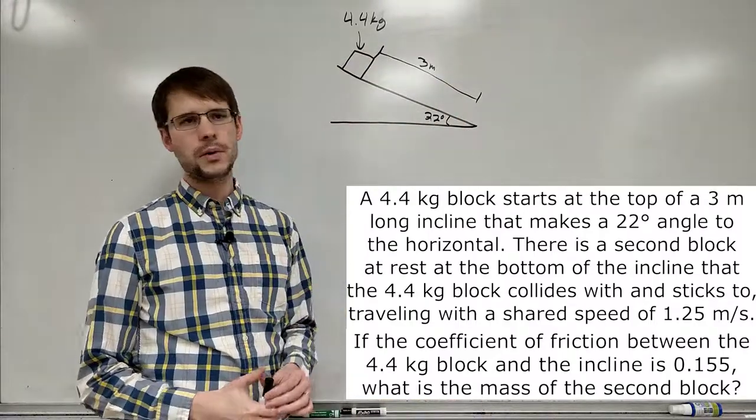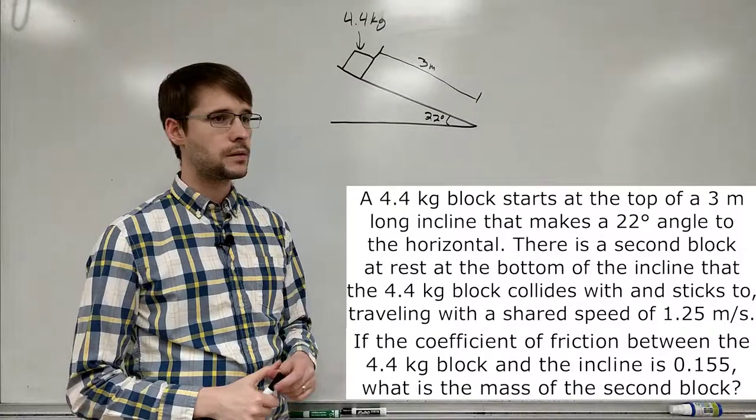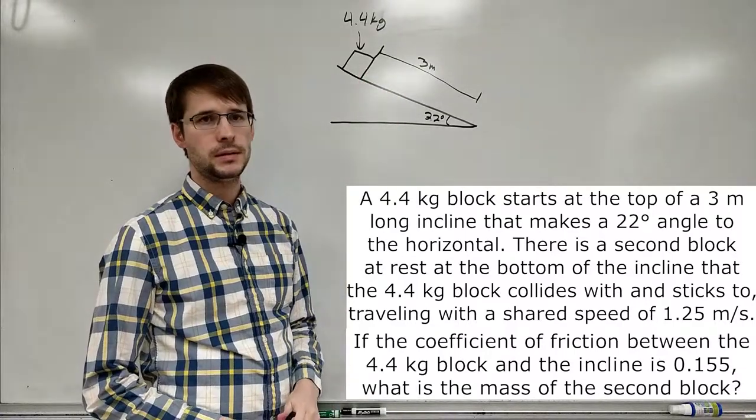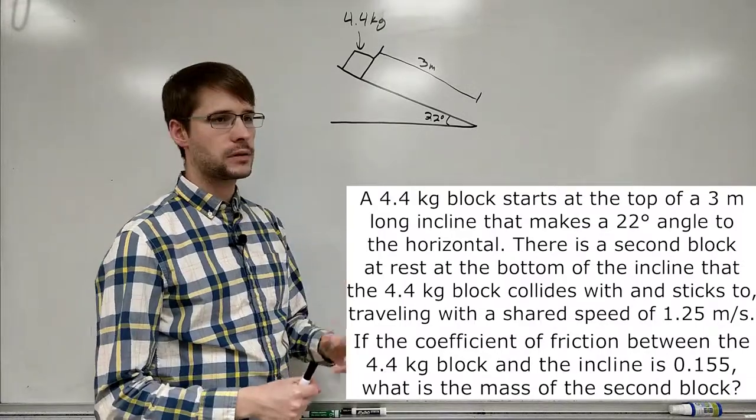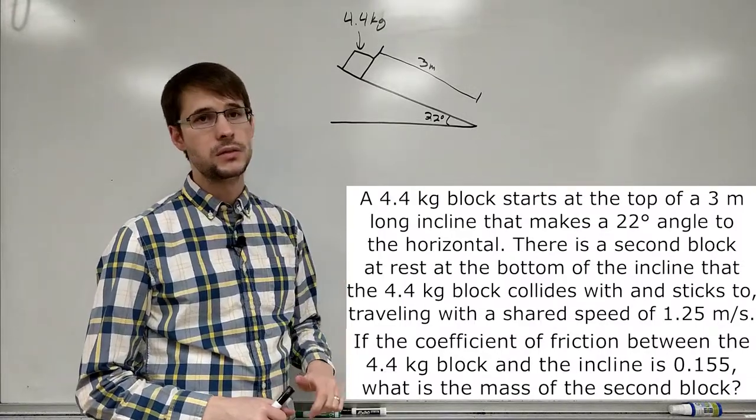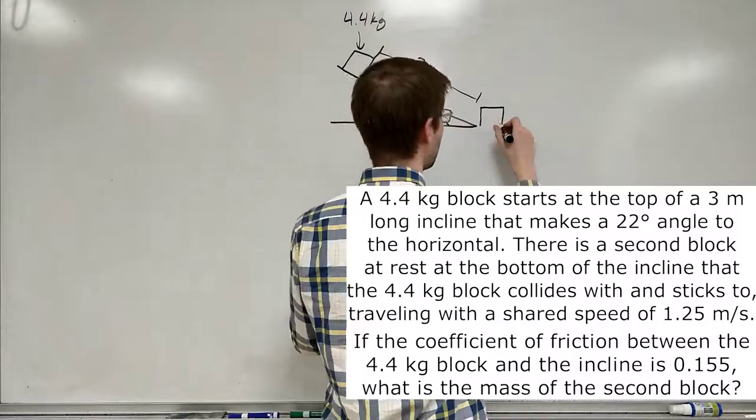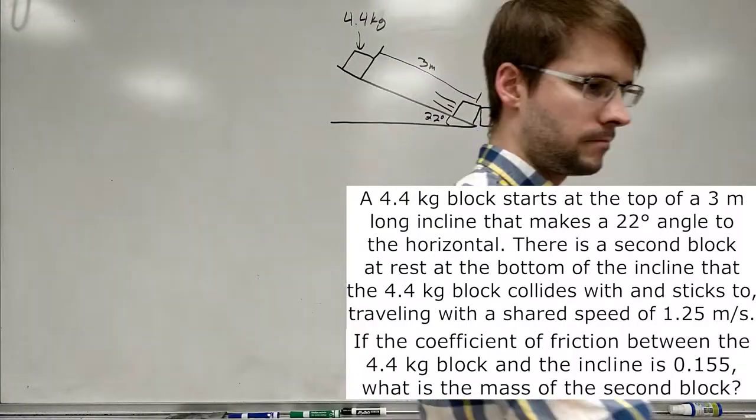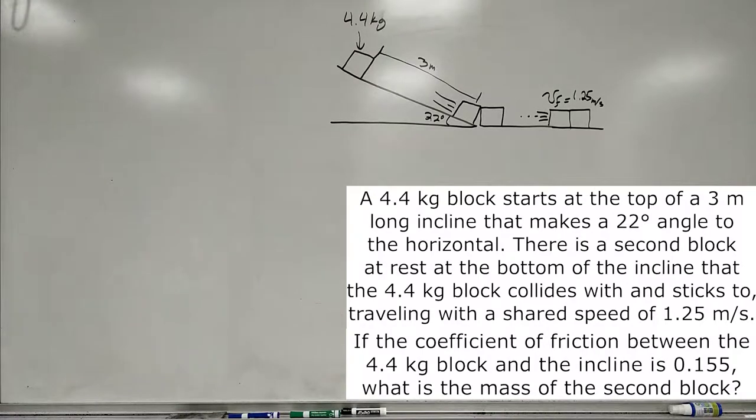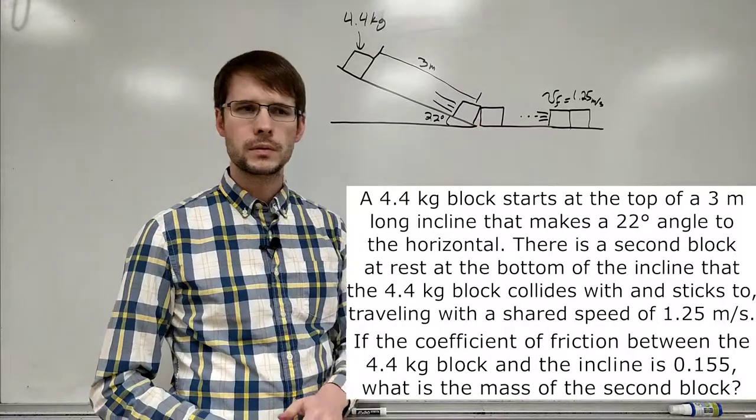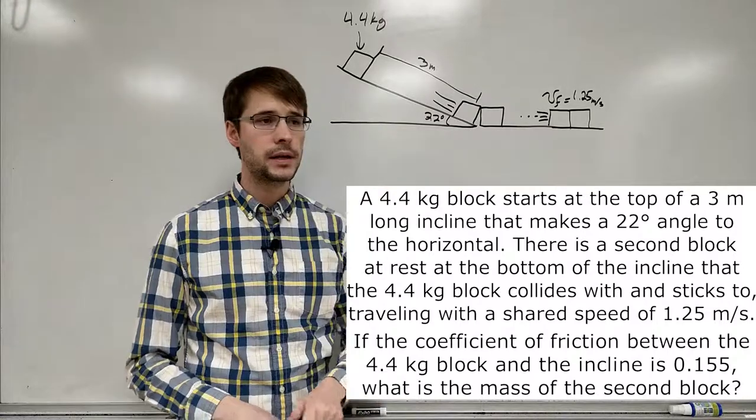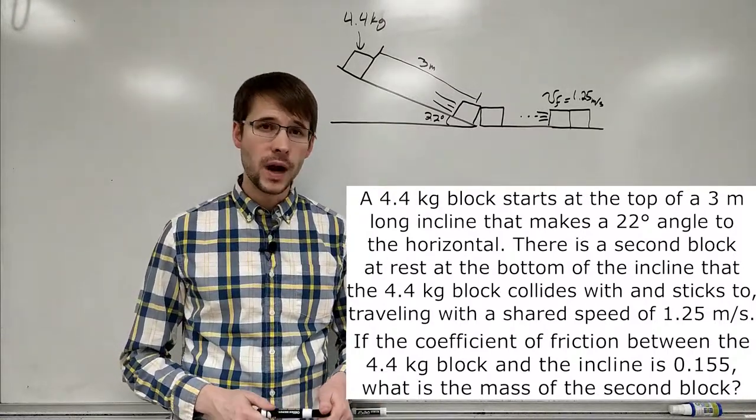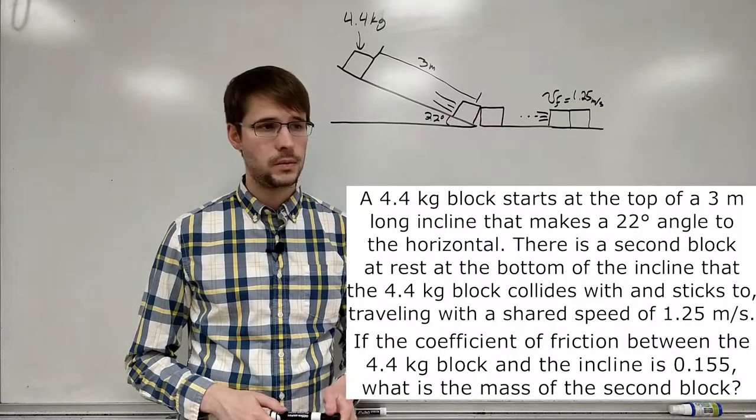There's a second block at rest at the bottom of the incline that the 4.4 kilogram block collides with and sticks to, traveling together after this collision with a shared speed of 1.25 meters per second. The block slides down the incline with a coefficient of friction of 0.155.